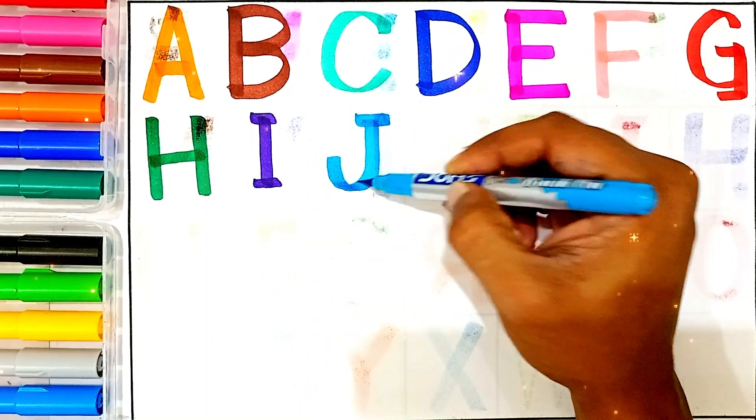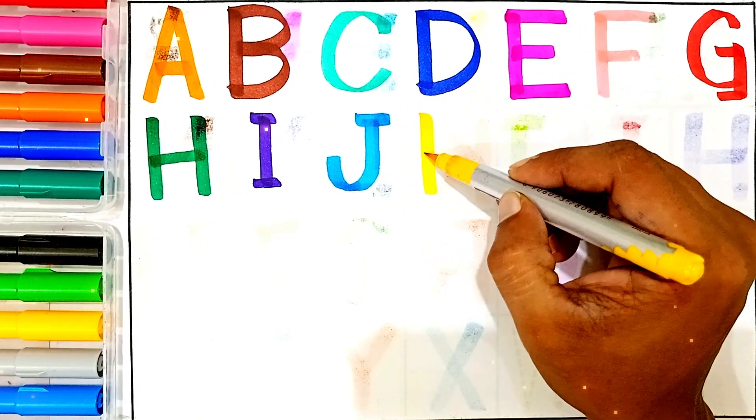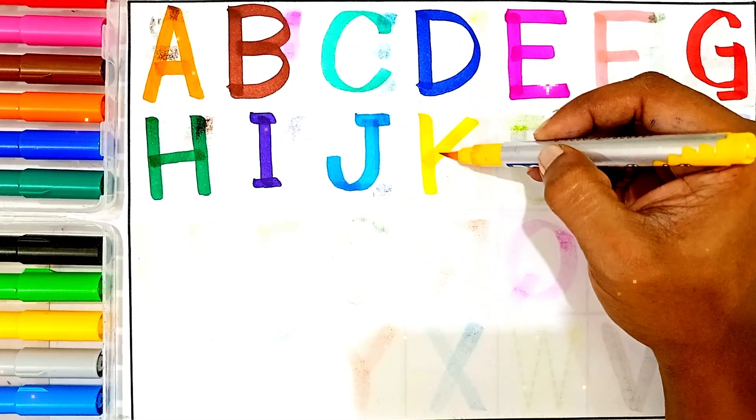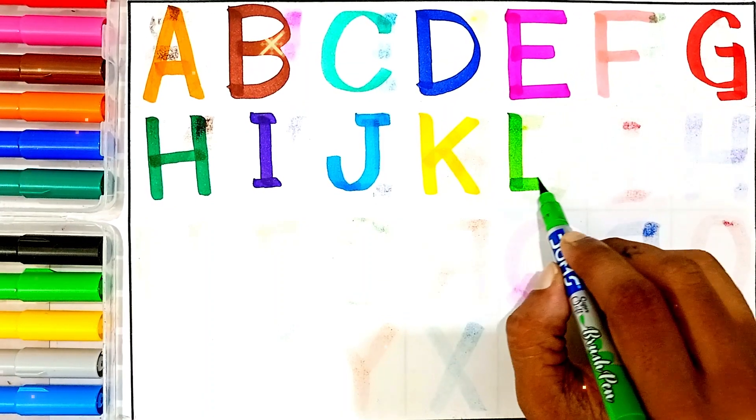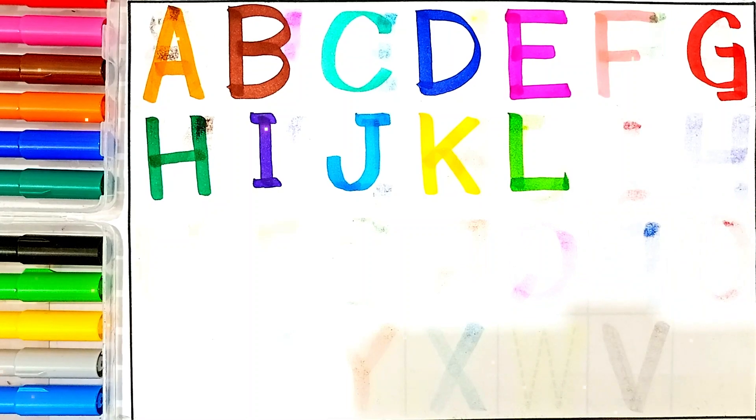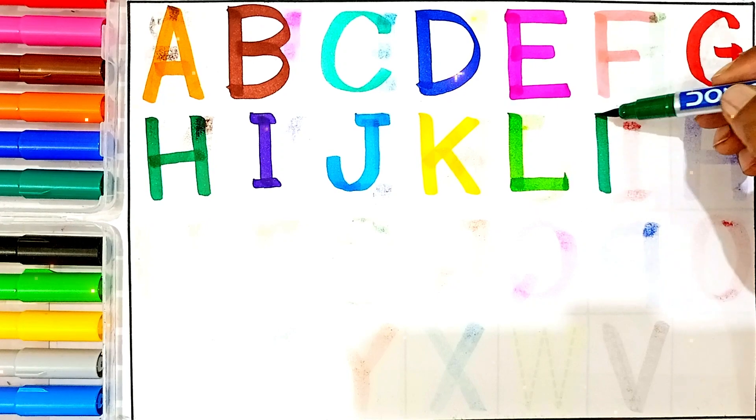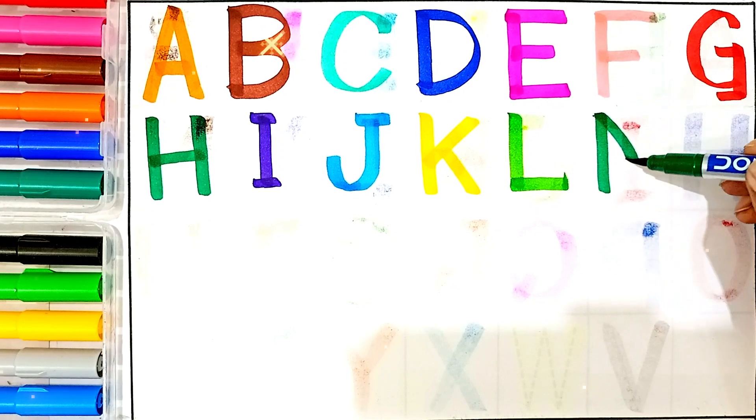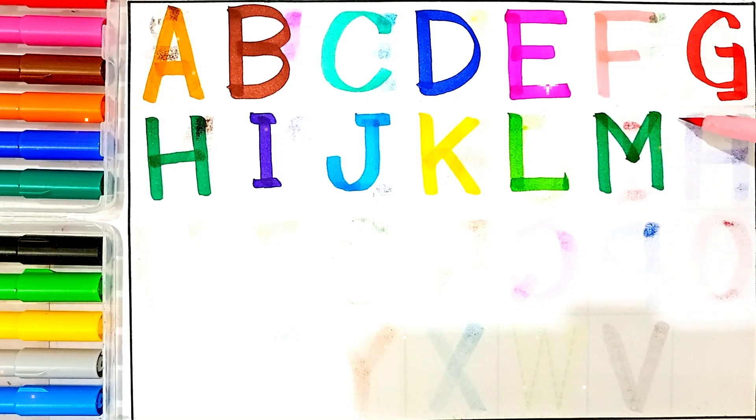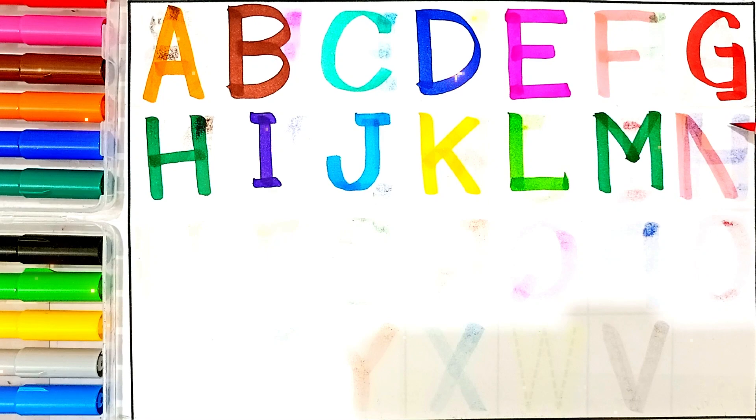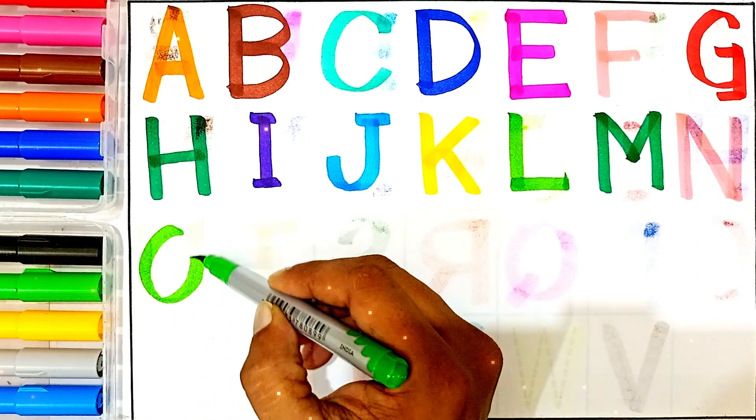K, yellow color, K for kangaroo. L, light green color, L for lemon. M, green color, M for mango. N for nest. O for orange.